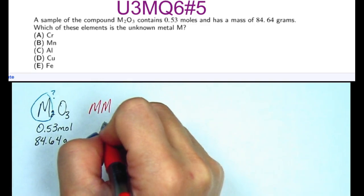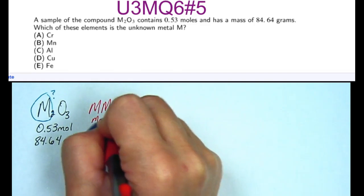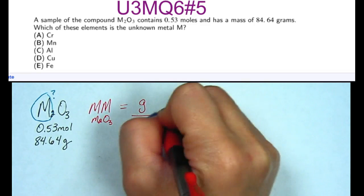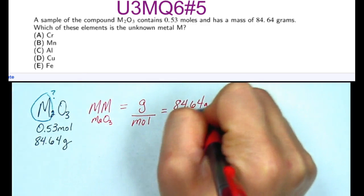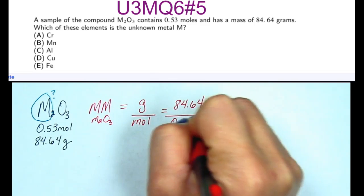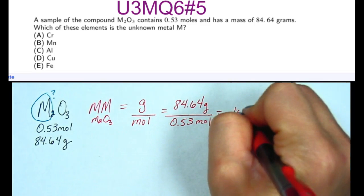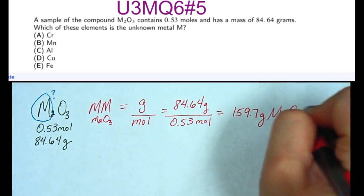In this case, we have the moles and grams of M2O3, so we can get the molar mass of the entire compound. If we take 84.64 grams and divide it by 0.53 moles, we get 159.7 grams per mole of M2O3.